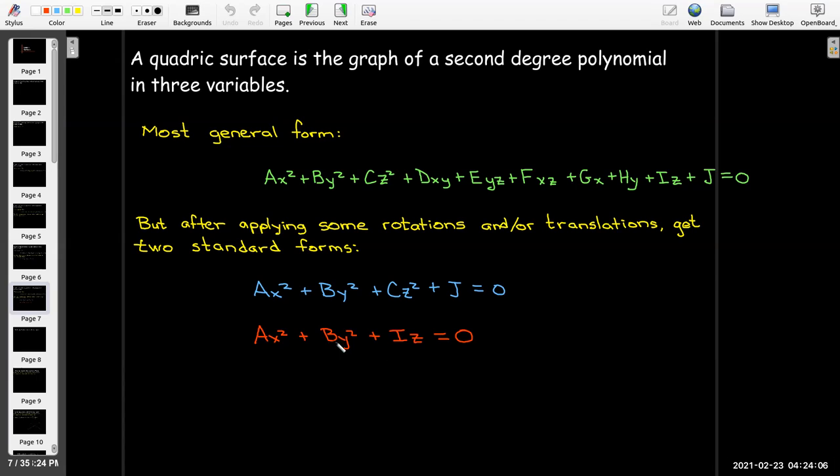Or I would have two squared terms and one linear term. These are our generic forms. I could have, for example, instead of Ax² + By² + Iz, I could have Ax² + z² + Hy. It could be linear in y and quadratic in x and z.